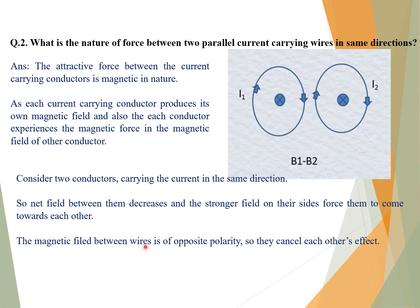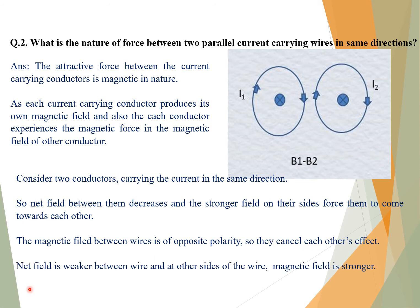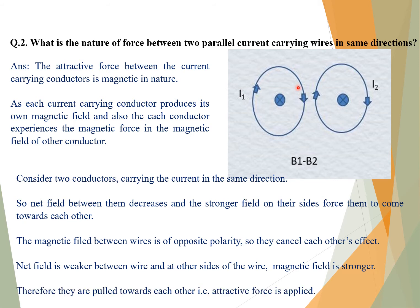The magnetic field between the wires is of opposite polarity, so they cancel each other's effect. The net field is weaker between the wires, and the magnetic field is stronger on the outer sides. Therefore, the wires are pulled towards each other — an attractive force is applied due to the opposite polarity between them.